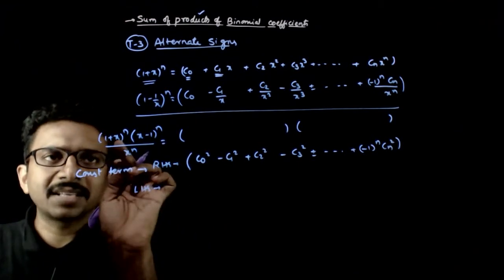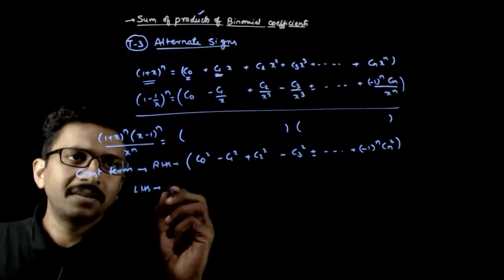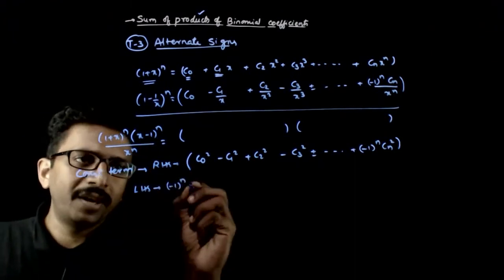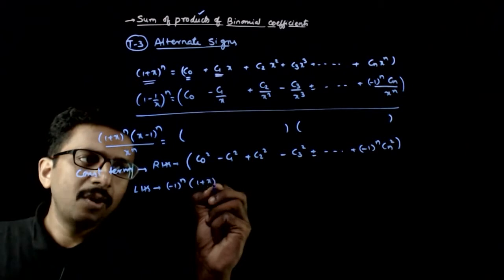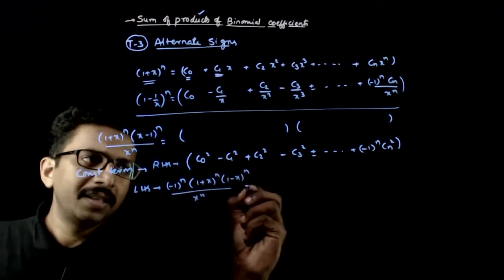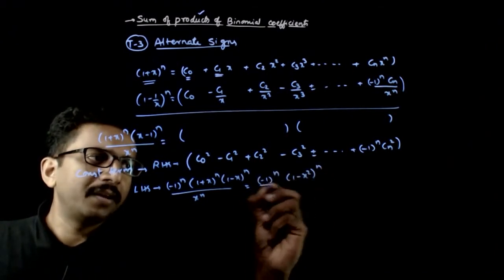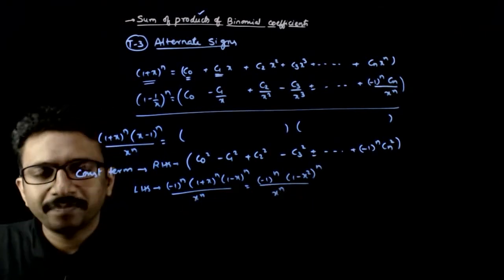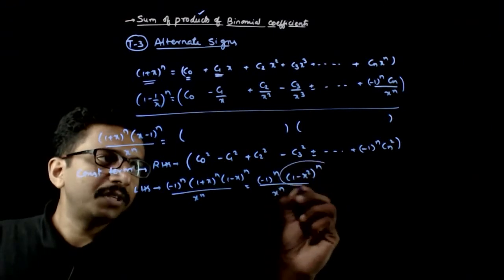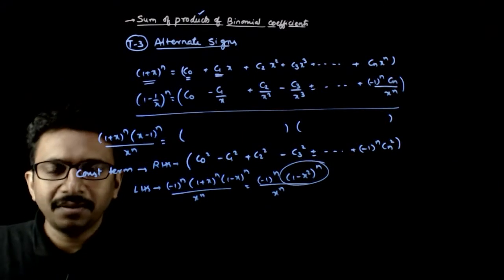Now what is the constant term on the LHS? The LHS can be written as (x-1)^n, or converting, as (-1)^n. If I take minus common, I get (-1)^n times (1+x)^n times (1-x)^n divided by x^n, which equals (-1)^n times (1-x²)^n divided by x^n. To get the constant term, we just need the coefficient of x^n in the numerator, then x^n cancels out.